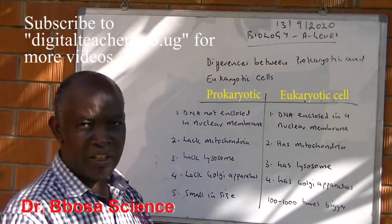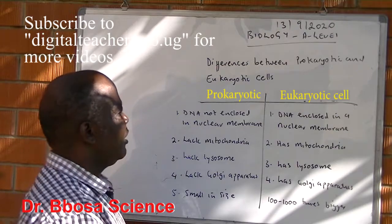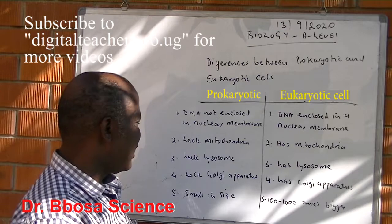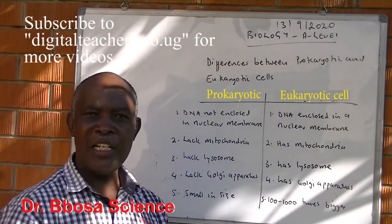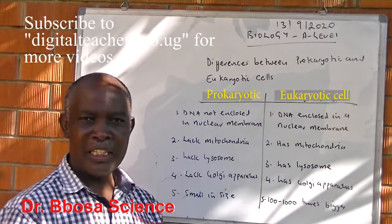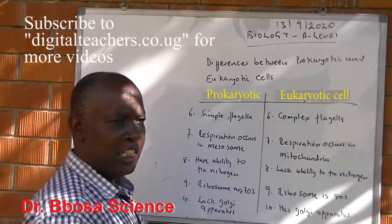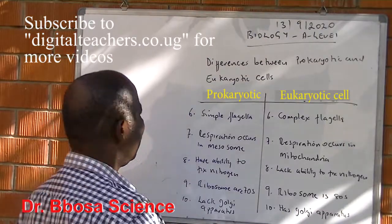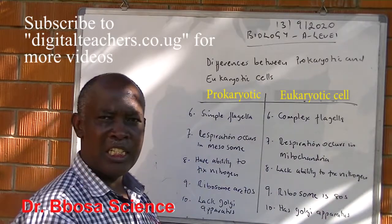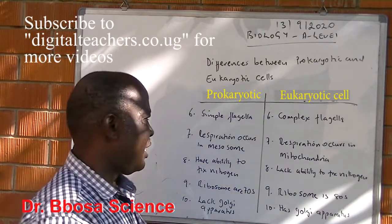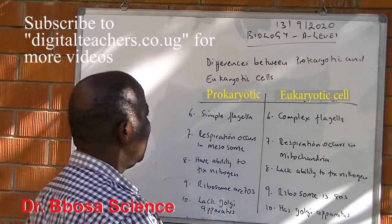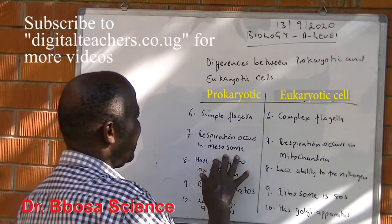5: Prokaryotic cells are small in size. Eukaryotic cells are 100 to 1000 times the size of prokaryotic cells. 6: Prokaryotic cells have simple flagella; eukaryotic cells have complex flagella. 7: In eukaryotic cells, respiration occurs in mitochondria.